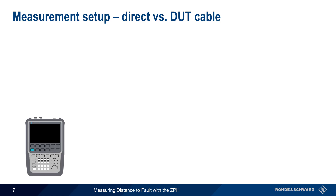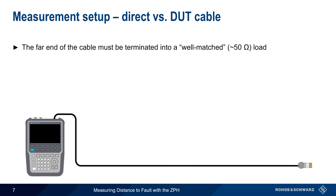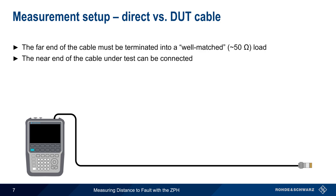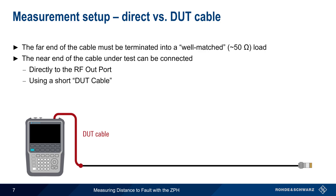To make DTF measurements, the far end of the cable under test must be terminated into a well-matched, or roughly 50-ohm load. This load may be a CAL standard, a dummy load, or an antenna that is resonant at the measurement frequency. Erroneous distance to fault measurements are often caused by a failure to terminate the far end of the cable. The near end of the cable can be connected directly to the ZPH's RF output port, or the cable can be connected using a short, high-quality DUT, or device under test cable.